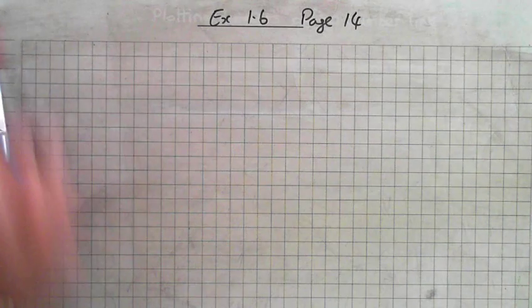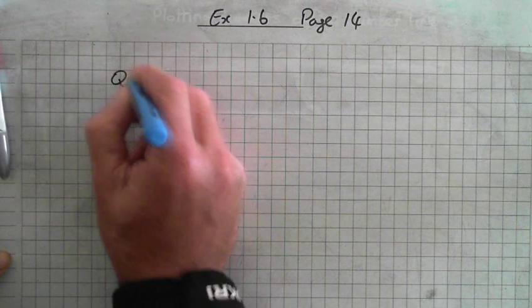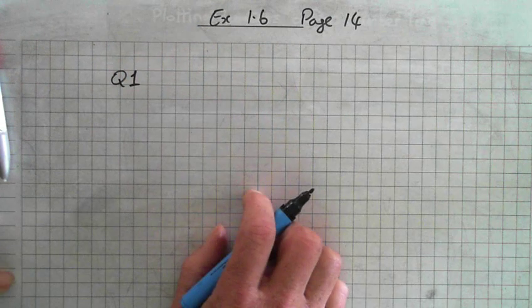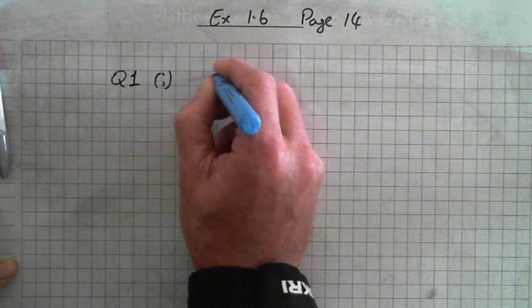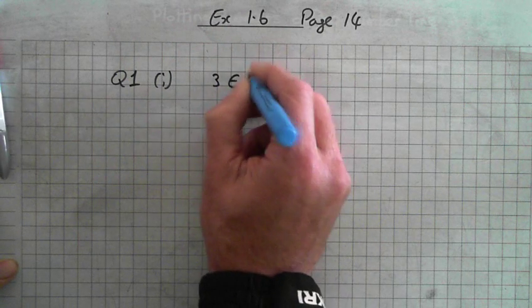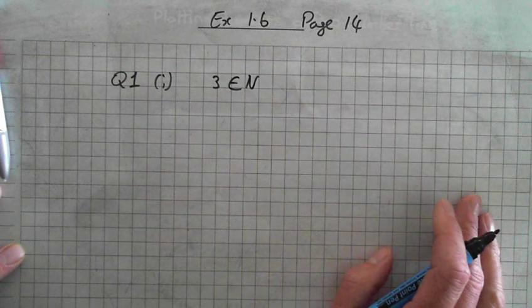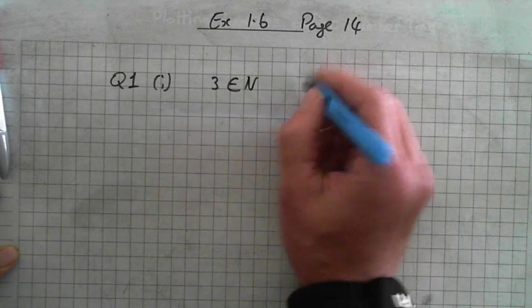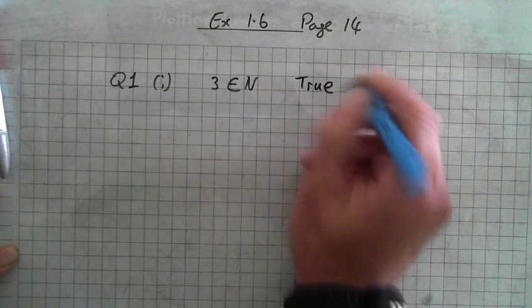So, page 14. Example of question 1. Question 1, part i: Is 3 an element of the natural numbers? Is 3 a natural number? You just have to go true or false. True.